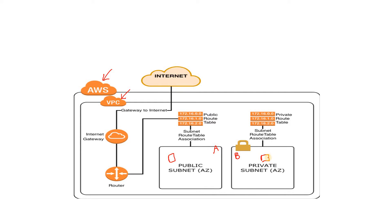We also created an EC2 instance in the private subnet B for an app server or database server, kept secure without direct internet connection. The question is how to enter this EC2, since SSH from the internet won't work. What we did was SSH into the public subnet EC2 first, and since both EC2 instances are in the same VPC, local communication is possible, so from there we SSH into the private subnet EC2.